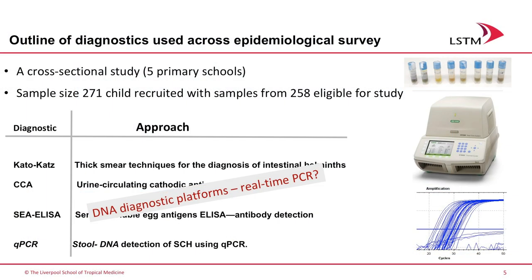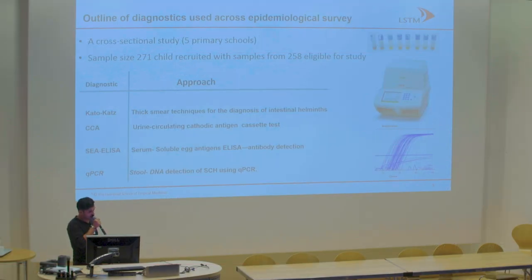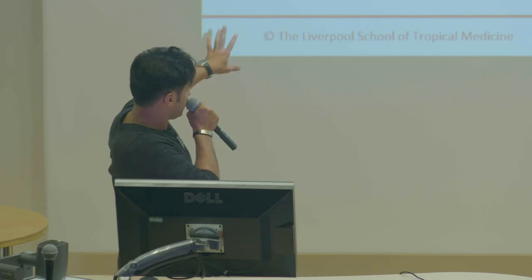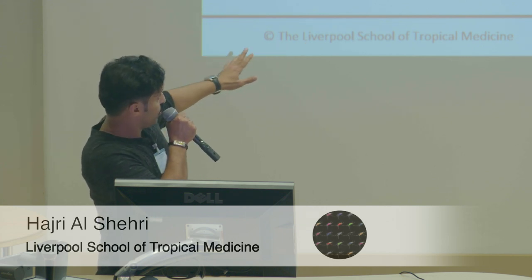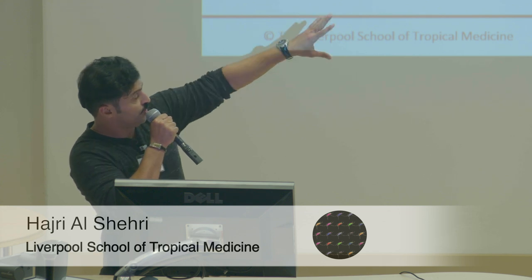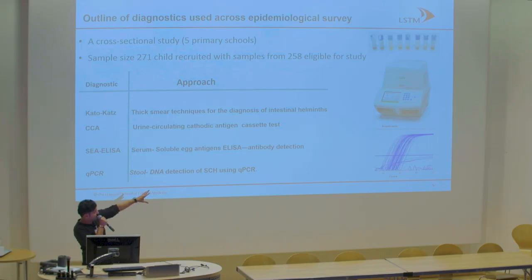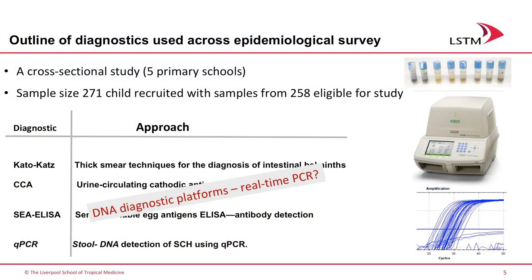We did a cross-sectional survey visiting five primary schools in the shoreline. We sampled 271 children, of whom 258 were eligible for this study. We did two-day Kato-Katz, two slides each. We did CCA antigen, ELISA antibody detection, and qPCR as well. For those who don't know about qPCR: we take stool samples, preserve in ethanol, do DNA extraction, run it in a machine, and you can see the result — deciding positive and negative.